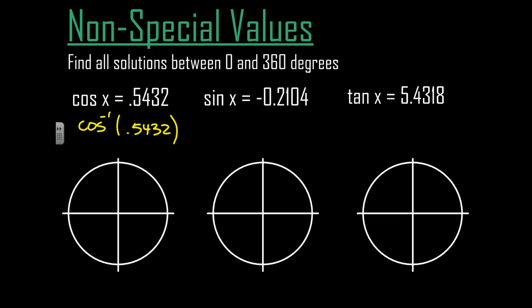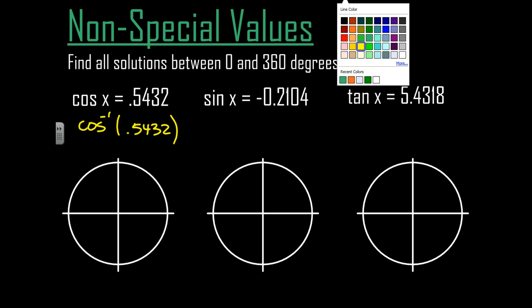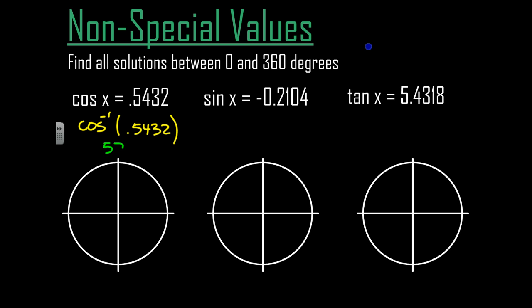So I'll go ahead and type that in my calculator here and the inverse cosine of 0.5432 is 57.1 degrees. Okay, well, if I put that on my circle, the cosine of 0.5432 cosine inverse is 57.1, right about there. So there is 57.1 degrees.